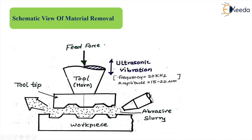If this is the work material removed from the workpiece and this is the tool worn out, then the ratio is known as the wear ratio. This is the schematic view of material removal and describes how it takes place.